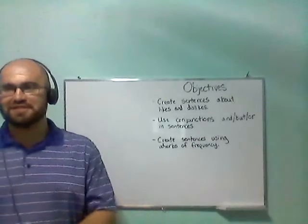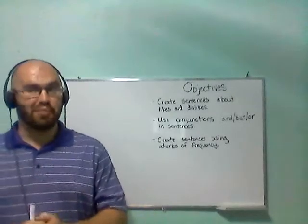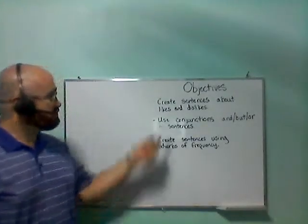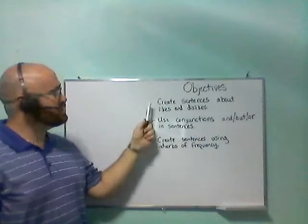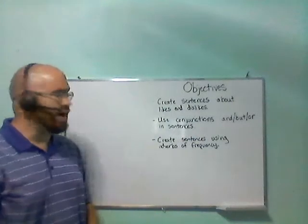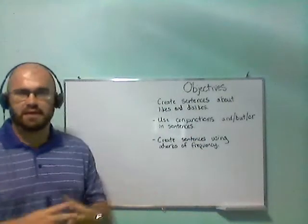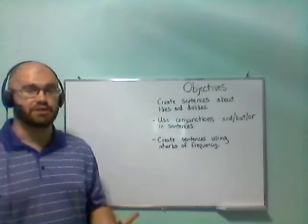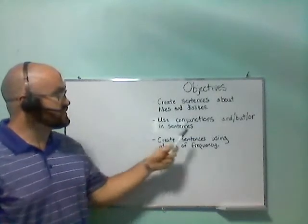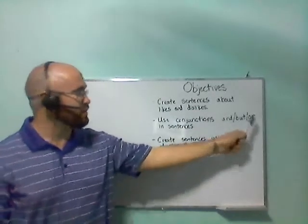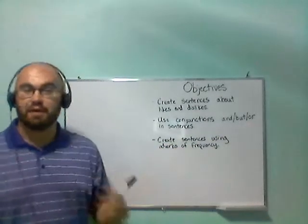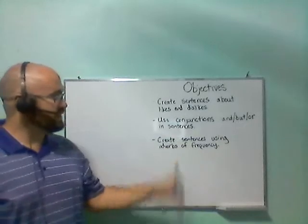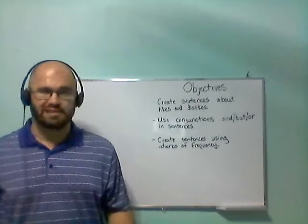All right, since we just finished the warm-up, we will go over the objectives for today. Our first objective is we will be creating sentences about likes and dislikes — specifically about what you like and don't like to do on vacation. We will also use the conjunctions and, but, and or in sentences about our likes and dislikes.